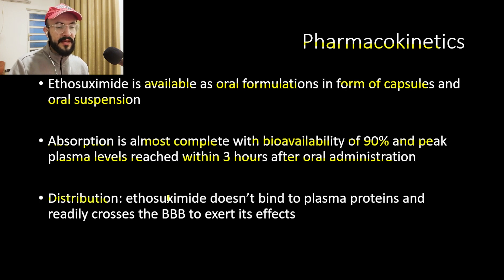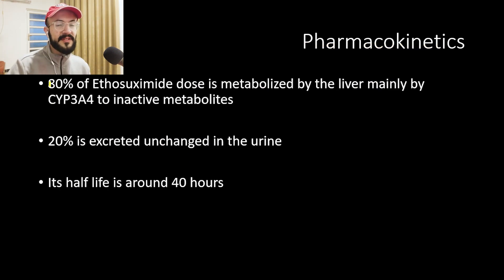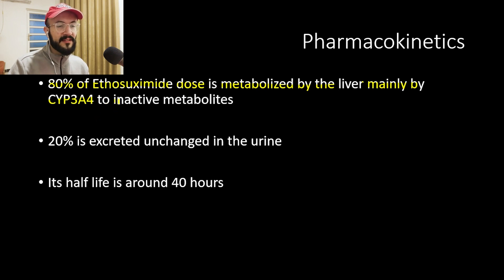Regarding distribution, ethosuximide does not bind to plasma proteins and gradually crosses the blood-brain barrier to exert its effects. About 80% of the dose is metabolized by the liver, mainly via the cytochrome P450 enzyme system, specifically CYP3A4, producing inactive metabolites. The remaining 20% is excreted unchanged in the urine, and its half-life is approximately 40 hours.